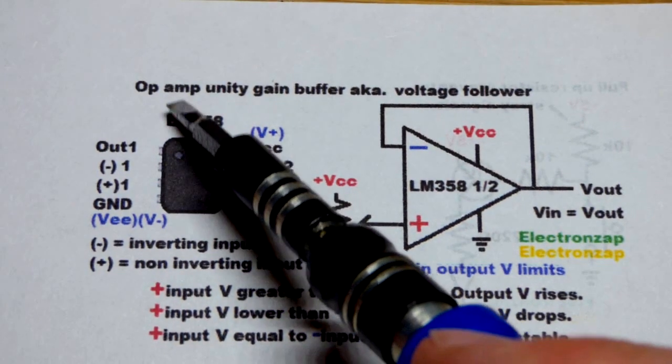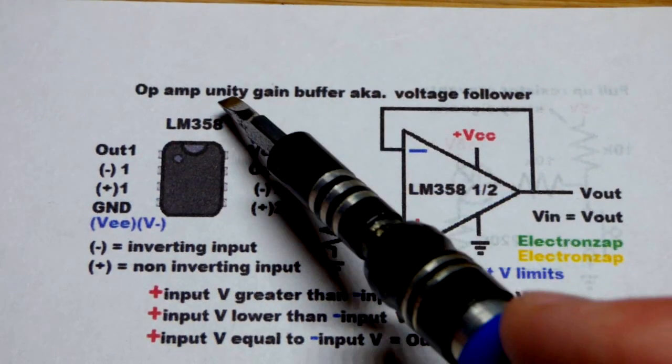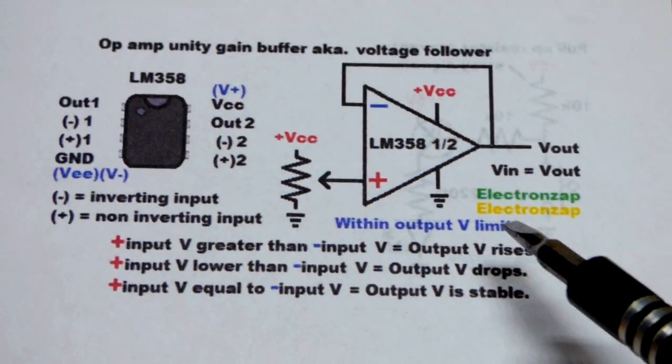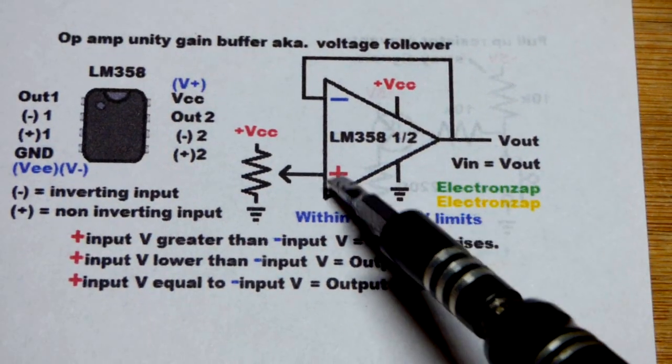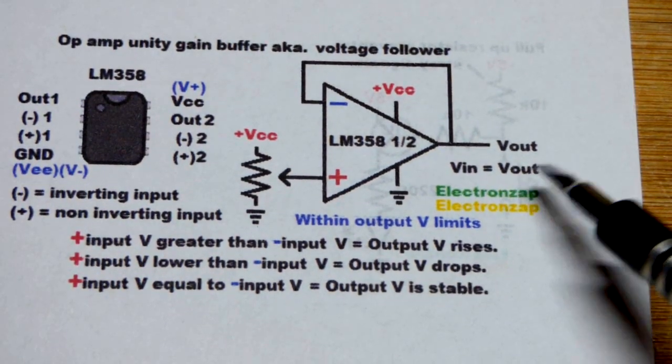In this video, we're going to look at using an op amp as a voltage follower. It could also be called a unity gain buffer. What this does is you give it a signal voltage, a voltage in, and it outputs that same voltage.